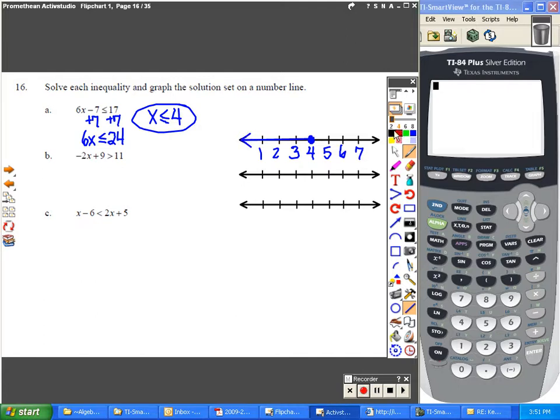Second problem. Start the same way. The opposite of plus 9 is to minus 9. So you subtract 9 from both sides. That gives you negative 2x is greater than 2.